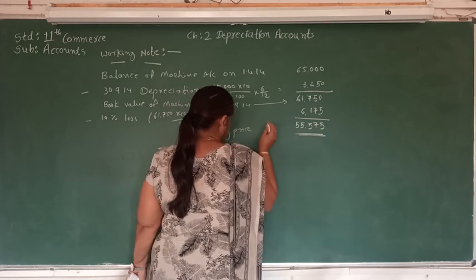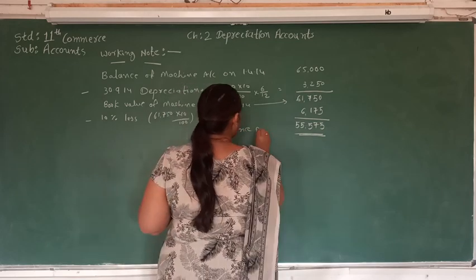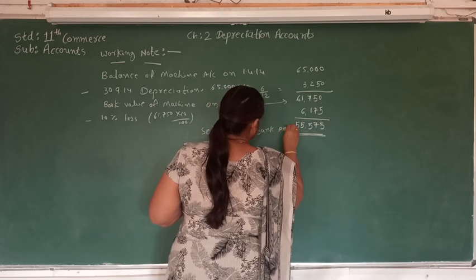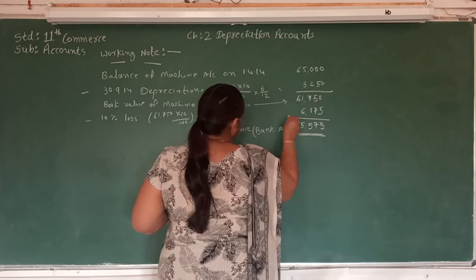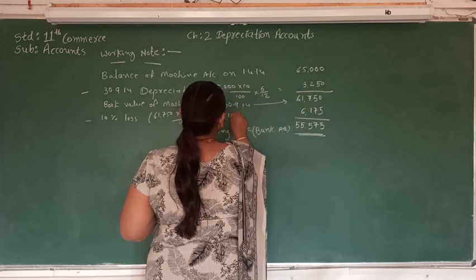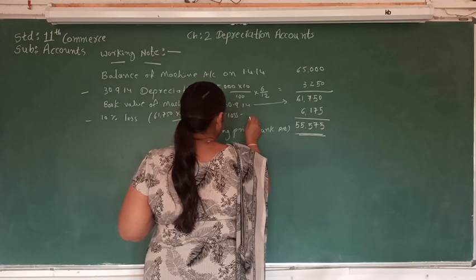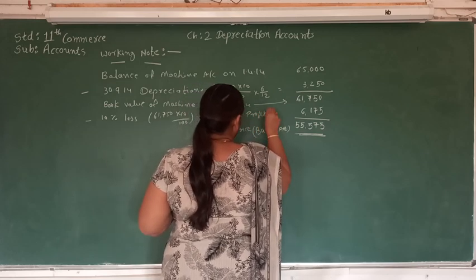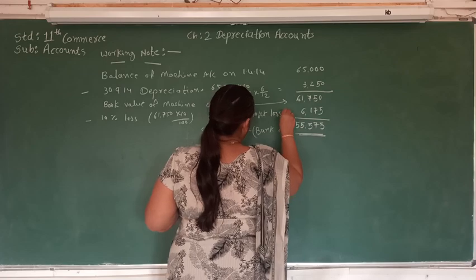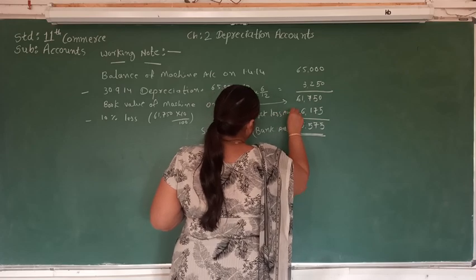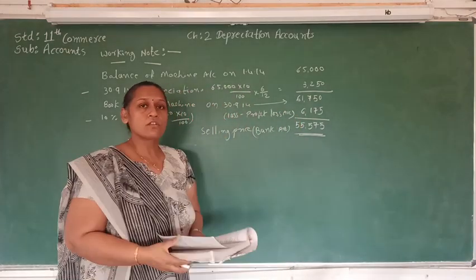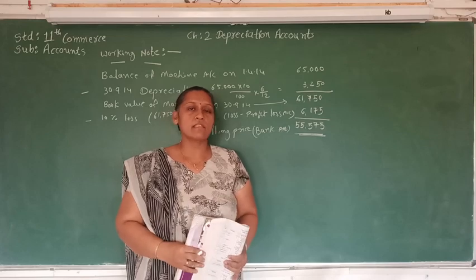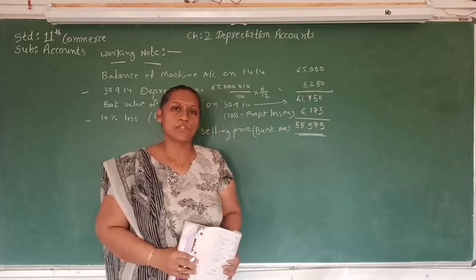The selling price of Rs. 55,575 will be recorded in the bank account, and the loss of Rs. 6,175 will be recorded in the profit and loss account. Students, you may note this down. Then we are going to prepare the journal as well as the machine account.